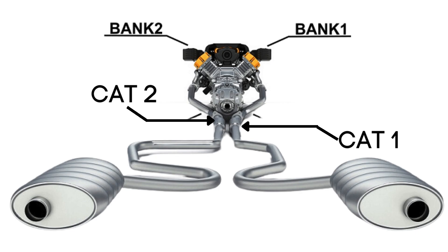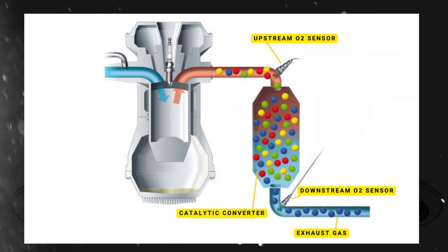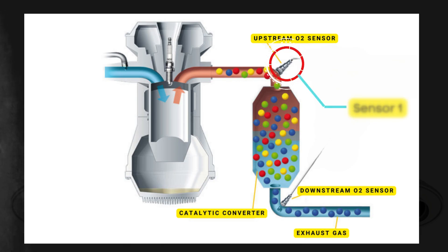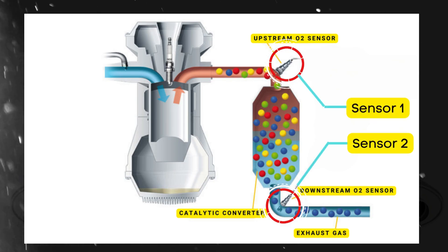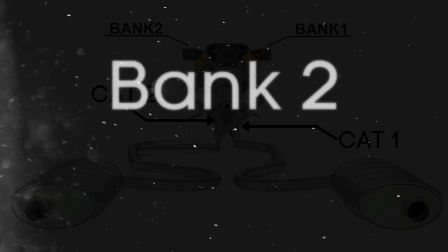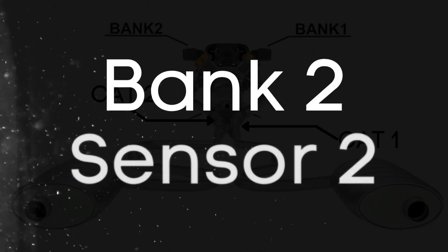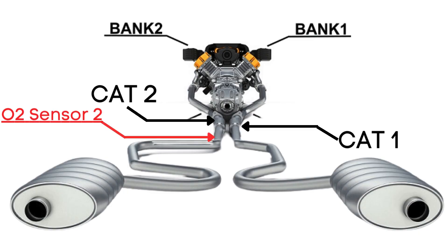Here's where the oxygen sensors come in. Each catalytic converter has two oxygen sensors: an upstream sensor, which we call sensor 1, and a downstream sensor, known as sensor 2. So when we talk about bank 2 sensor 2, we're focusing on the oxygen sensor that's downstream on the opposite side of the engine where cylinder 1 is located.